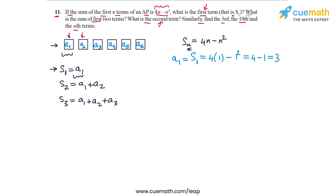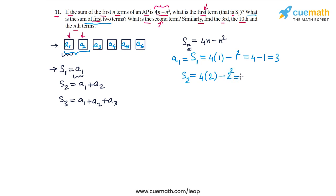The next question asks: what is the sum of the first two terms? That is A1 plus A2, which is S2. So S2 equals 4 into 2 minus 2 squared, which is equal to 8 minus 4, or 4. So the sum of the first two terms is equal to 4.